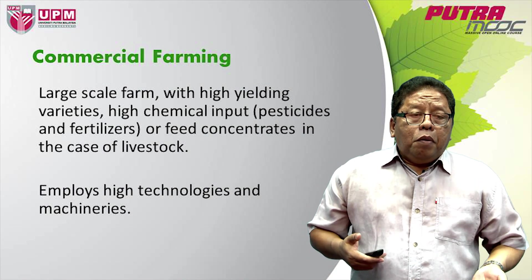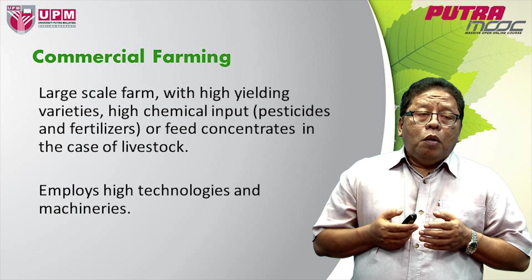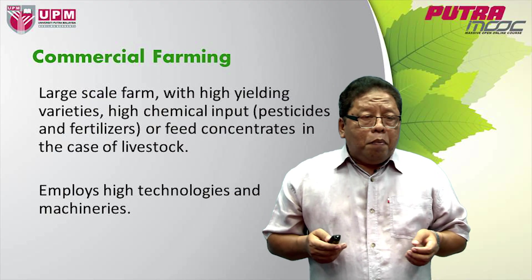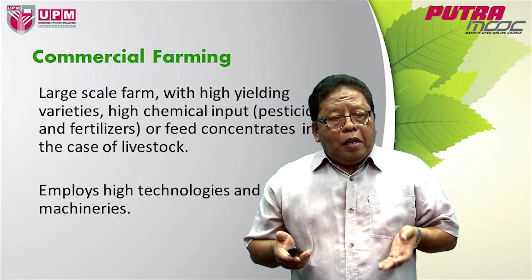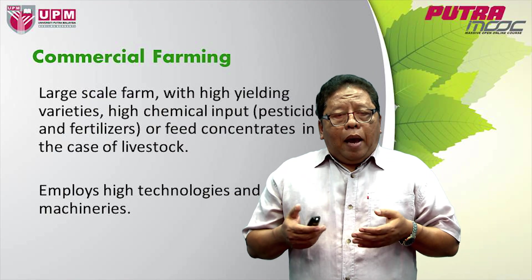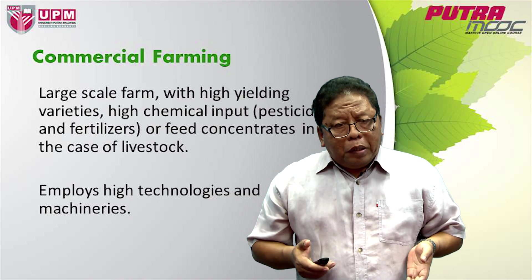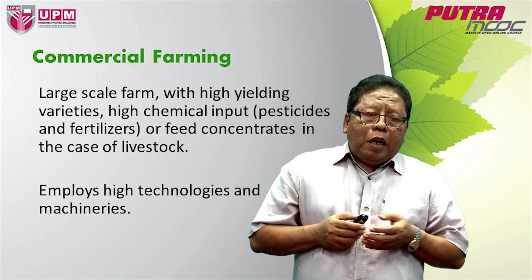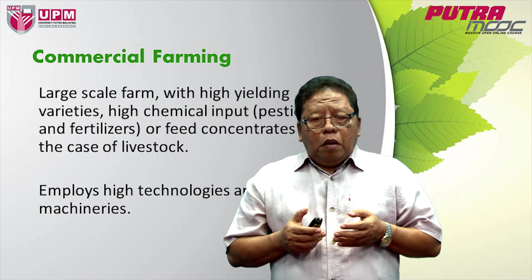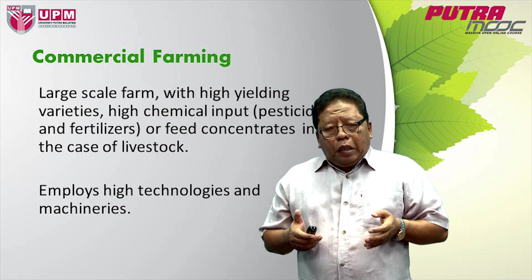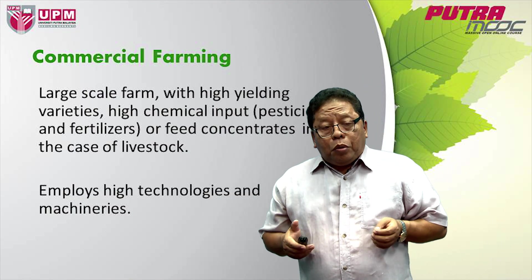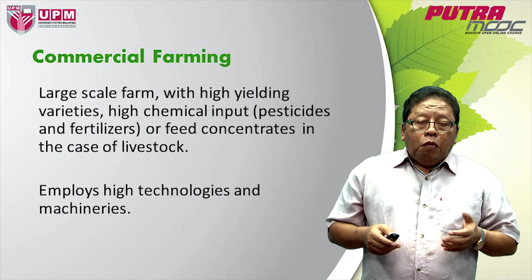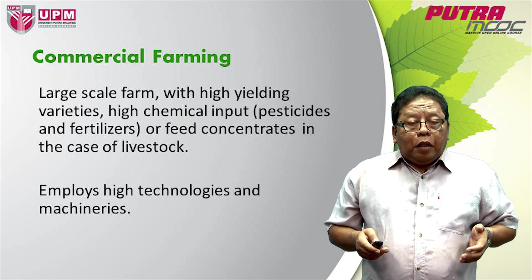Now those have changed, and we see a lot of commercial farming. This is present-day farming: large-scale farms with high-yielding varieties and high chemical inputs. There are a lot of fertilizers and pesticides being used. In the case of livestock or animal production, feed and concentrate are being used. They also employ high technologies with machinery and other technologies.